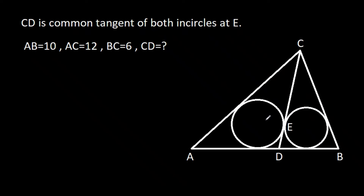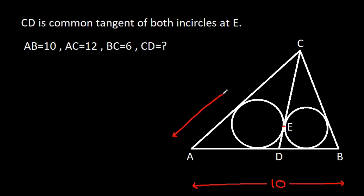In this video, we have been given that CD is the common tangent of both the incircles at E, and AB is 10, AC is 12, and BC is 6. We have to find CD.